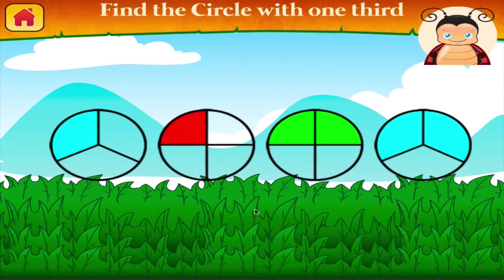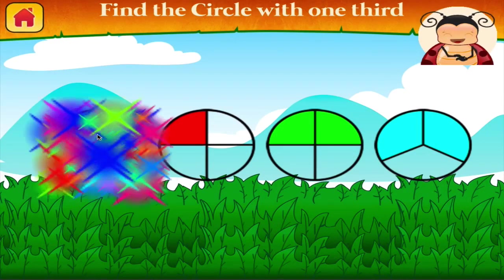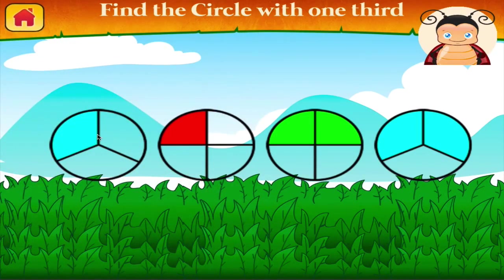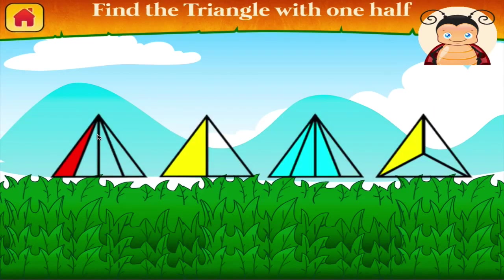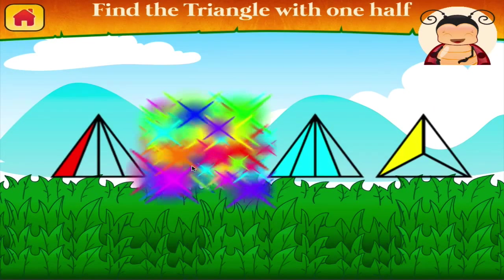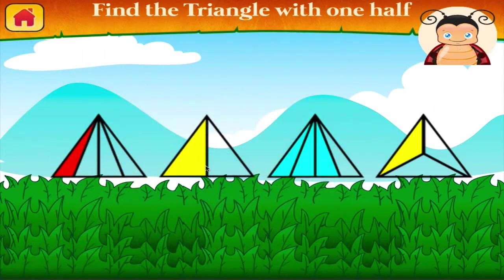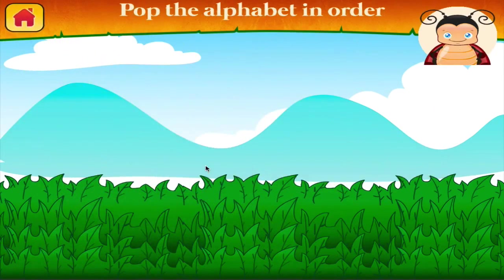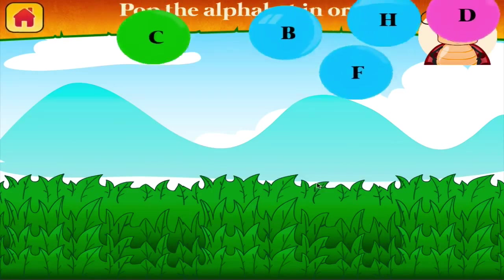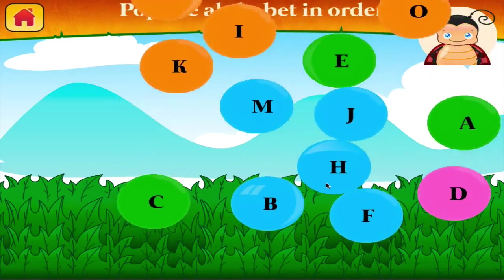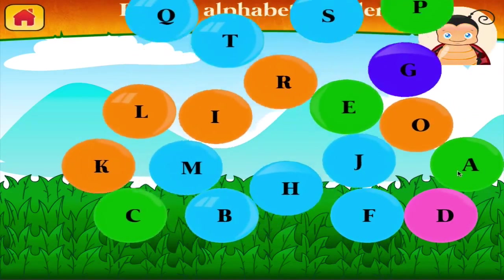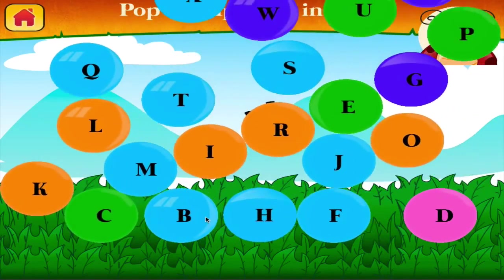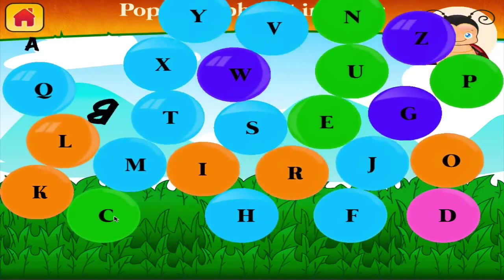Find the circle with one-third. Terrific! Find the triangle with one-half. Excellent! Pop the alphabet in order: A, B, C...